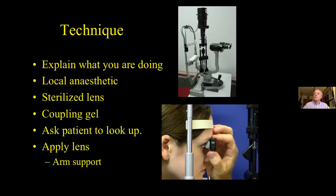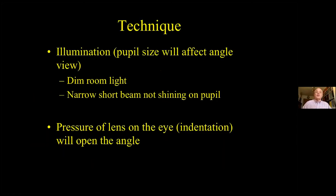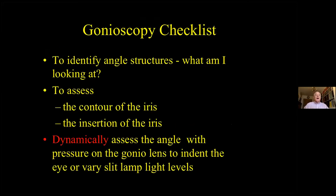Ask the patient to look up and apply the lens. You can use one of your fingers to control the lower lid. Have an arm rest available. Be aware that illumination of the eye will affect the pupil size and therefore the structures seen in the angle. Additionally, pressure on the gonio lens will open the angle. Both these factors can be used to gain more information about the angle, but it's important to use them in a controlled manner. As with all examination techniques, it's important to have a checklist to ensure that nothing is missed — especially now with Covid and the increased difficulty associated with eye examination — to ensure that every examination is performed thoroughly, to minimise the need for repetition.